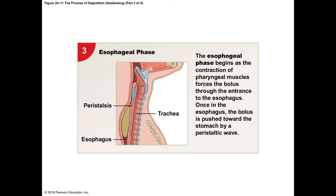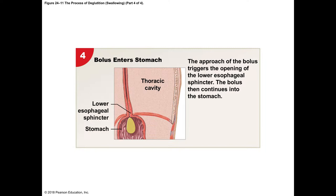When we looked at absorption in the mouth, not many things get absorbed there. Some do — nitroglycerin is placed under the tongue and gets absorbed there; Vitamin B12 can also be absorbed in the mouth. But it's not a primary area for absorption. In the esophagus, nothing gets absorbed at all.